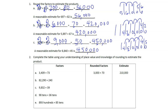Number two says: complete the table using your understanding of place value and knowledge of rounding to estimate the product — same process as number one. I'm going to round the first factor to 80,000 and the second factor to 200. Eight times two is 16, and we have six zeros total, giving us 16,000,000 — sixteen million.